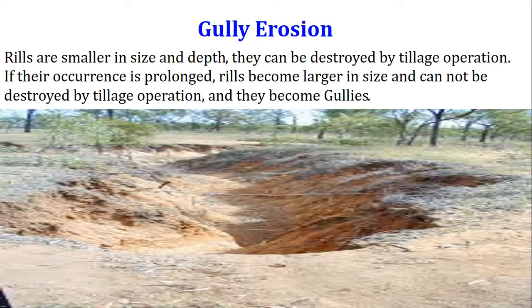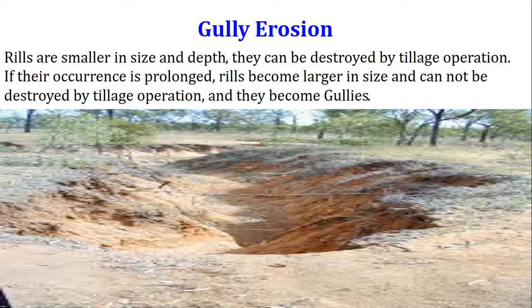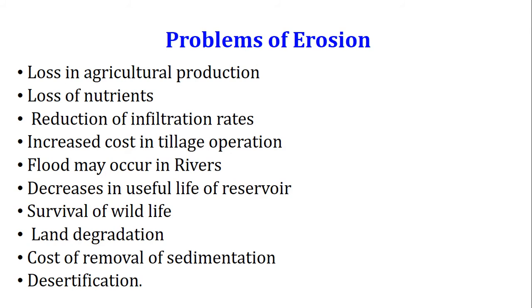Gully erosion: rills are smaller in size and depth and can be destroyed by tillage operations. If their occurrence is prolonged, rills become larger in size, cannot be destroyed by tillage, and they become gullies. You can see here how rills are converted into gullies.